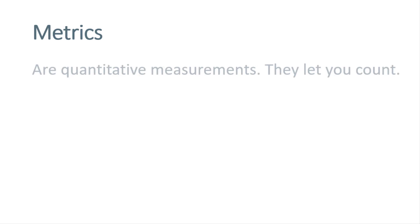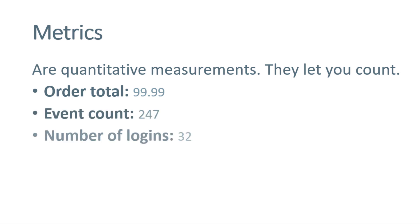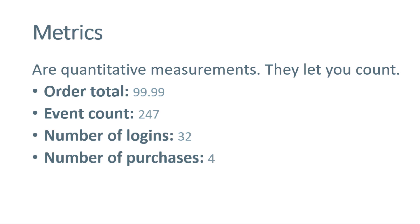As for metrics, they are quantitative measurements — they let you count things. In other words, they are numbers. Although in some cases numbers can also be dimensions, let's keep things simple right now. Here are several examples: order total is a metric, event count is definitely a metric, then we have number of logins, how many times a certain client made purchases on your site, and product price can also be a metric. These are numbers and we can count them. If one visitor made four purchases and the other made five, then in total you have nine purchases, so the metric is number of purchases, which is nine.